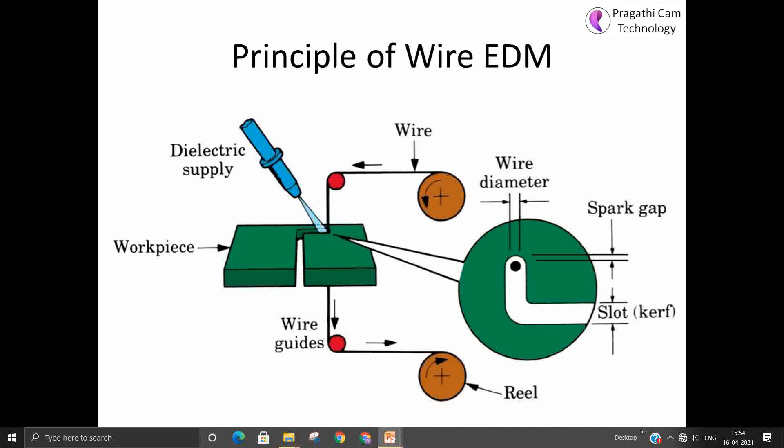This means that while wire cutting, the spark is generated between the workpiece and the wire. So the workpiece temperature rises around 8000 degree centigrade to 12000 degree centigrade.